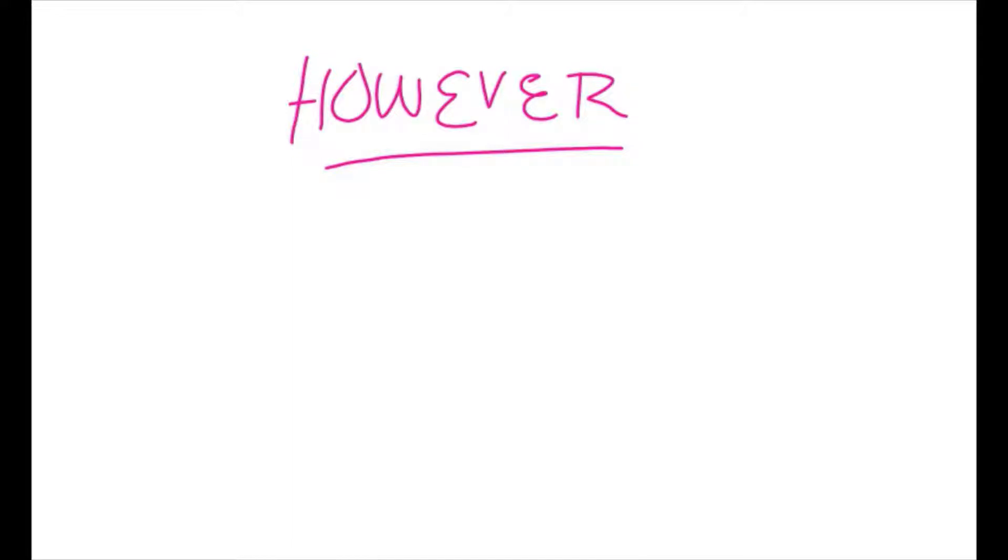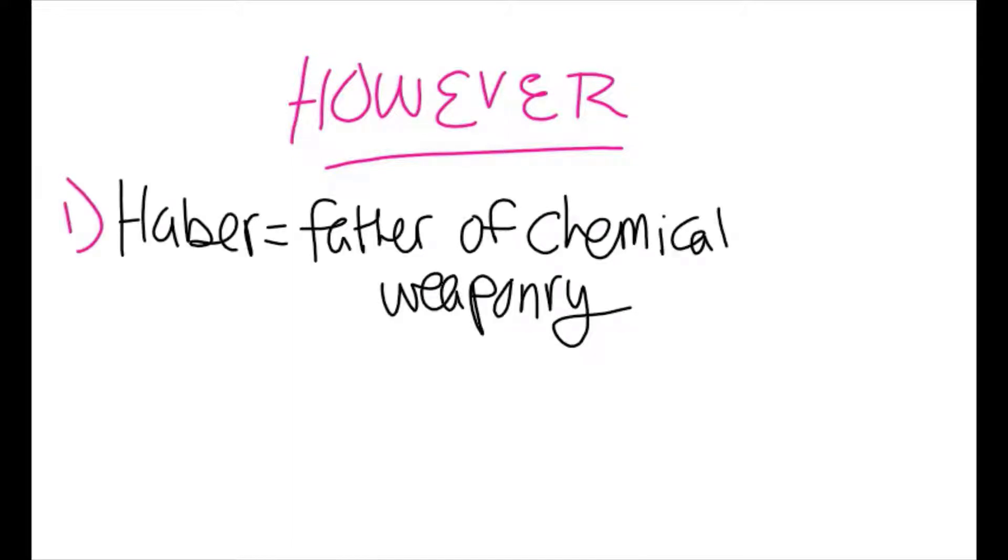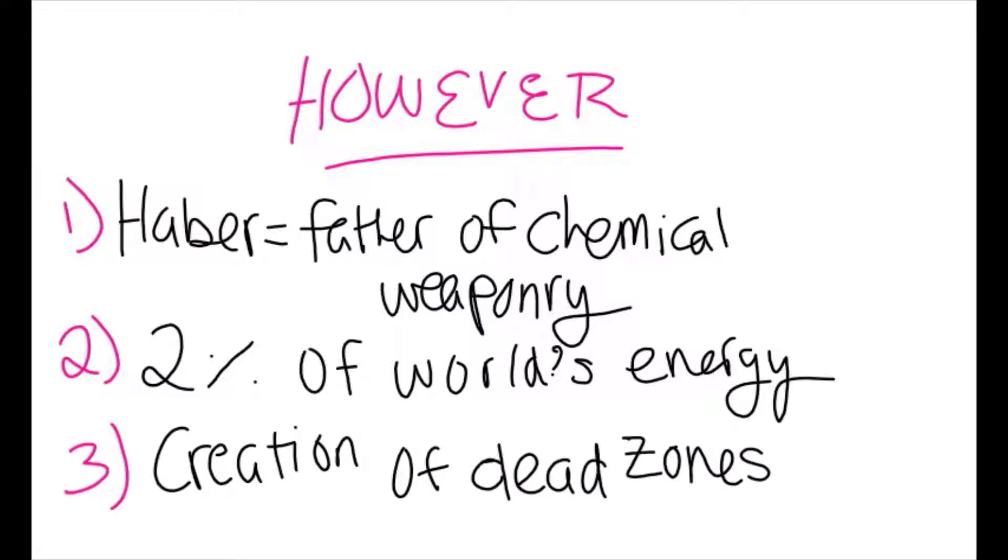However, there are many real-world drawbacks to this process. First, Fritz Haber's implementation of breaking and bonding elements was key not only in fertilizer production, but also chemical weapons used in World War II, making Haber the father of chemical weaponry. Additionally, the Haber process takes up 2% of the world's energy, as the conditions to sustain production take a toll on resources.